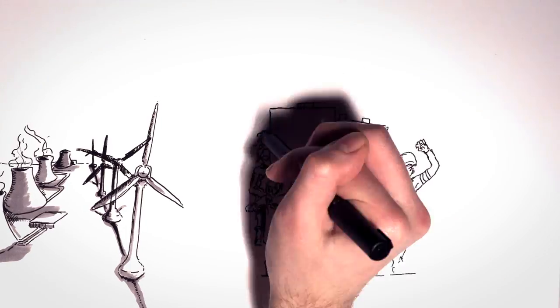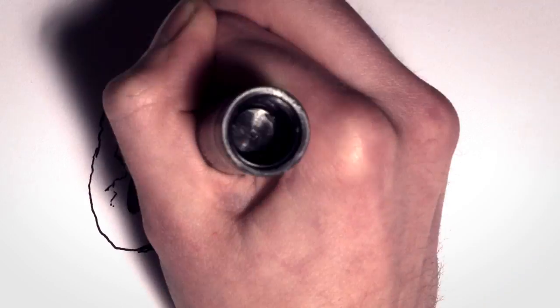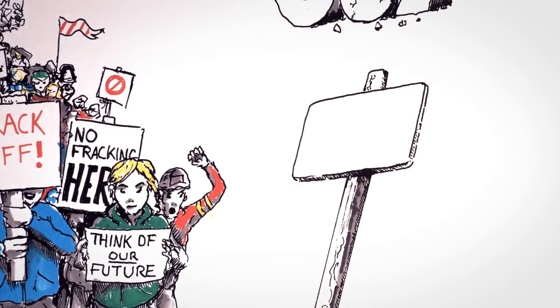Most people don't want fracking to take place under their homes. Yet fracking licenses are now available on 60% of British land. The Green Party will ban fracking completely.